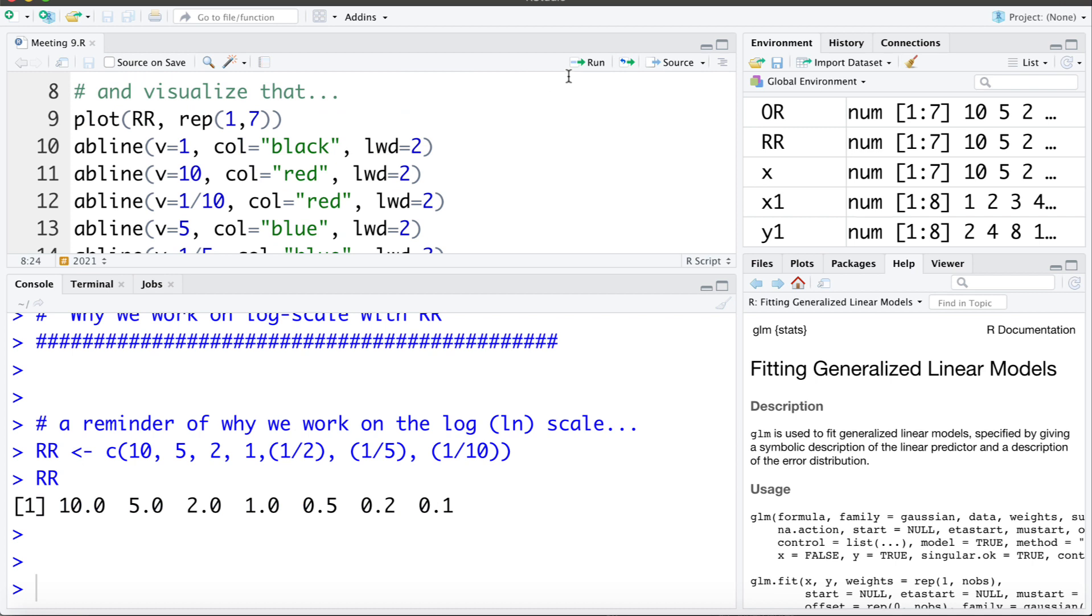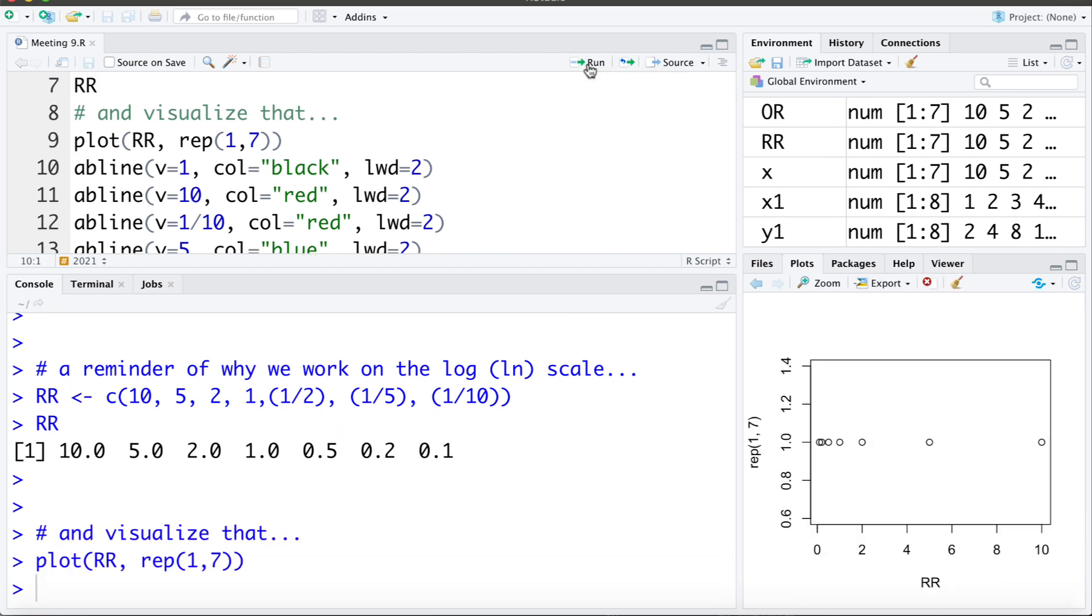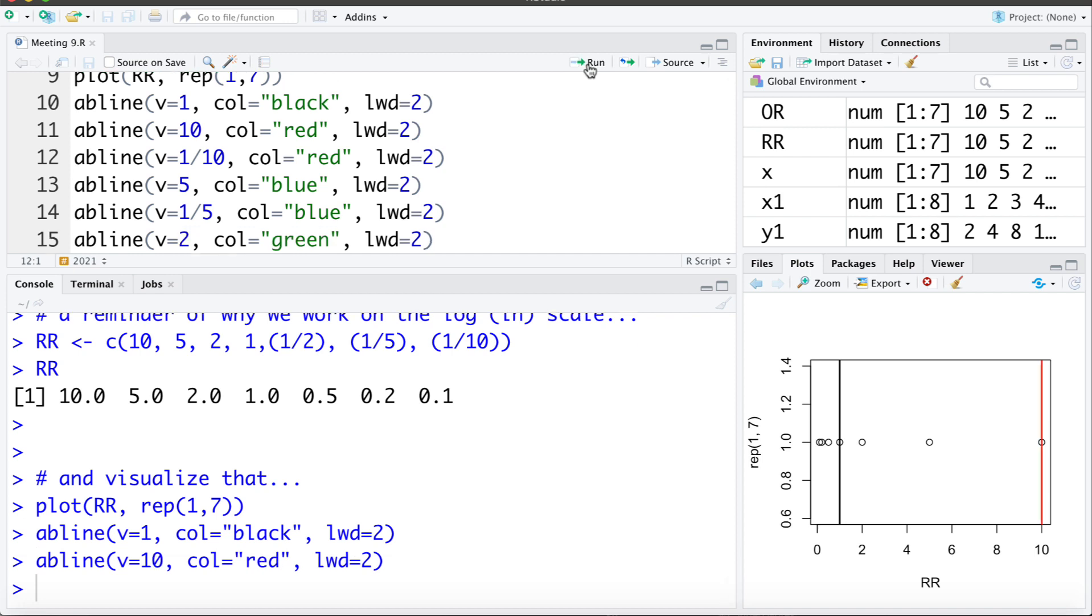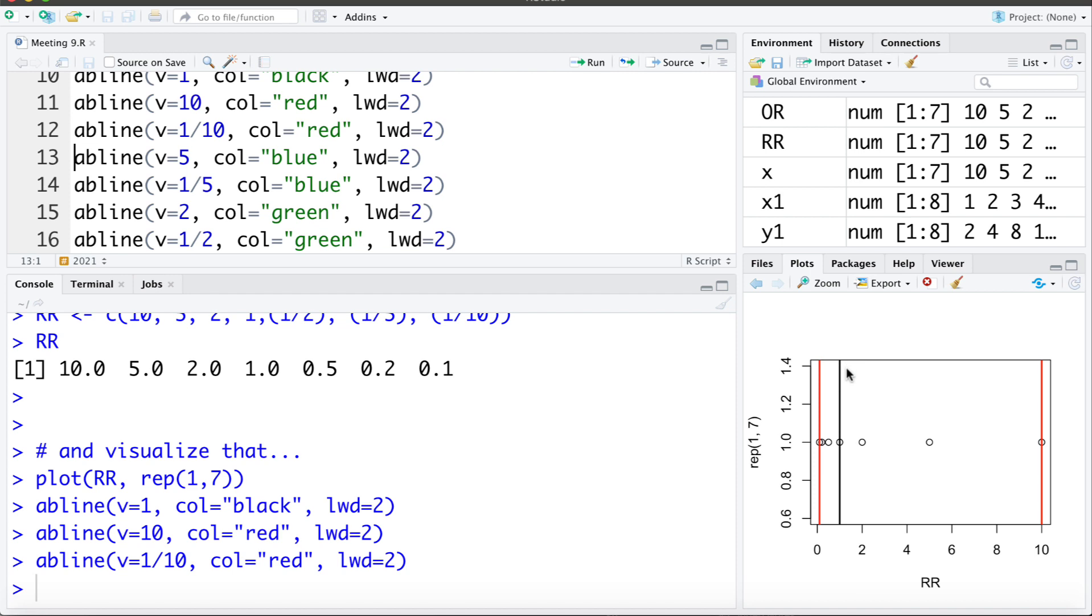Let's visualize those rate ratios. I'm plotting each versus 1, 2, 3 up to 7. I'll add a vertical line at a rate ratio of 1, the null value. Recall the rate ratios of 10 and 1/10 are similar. Let's add lines for those. We see the distance between 10 and the null value of 1 is really large, while the distance between 1/10 and the null is quite small. But these distances should be equal.